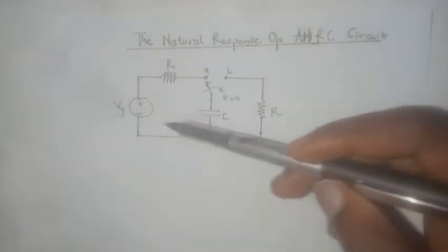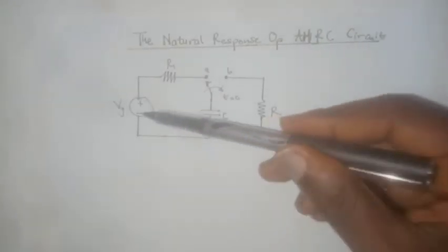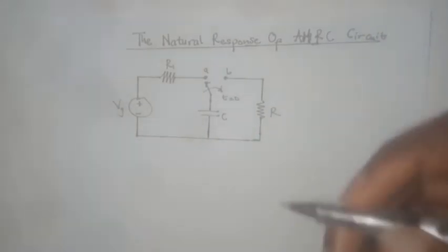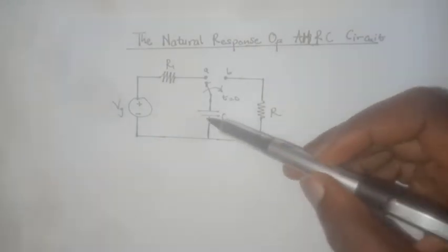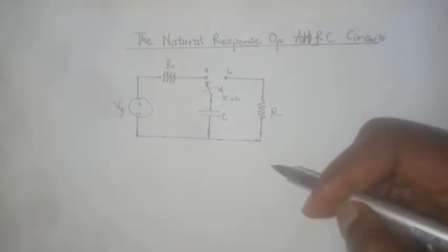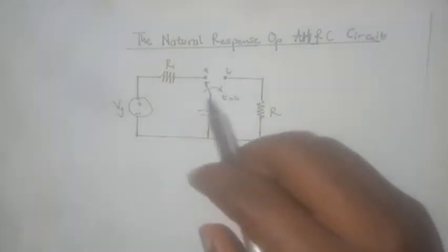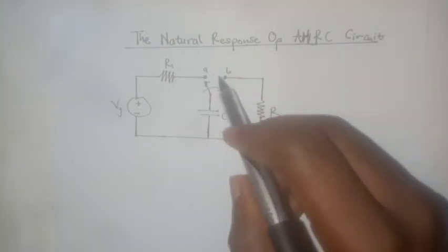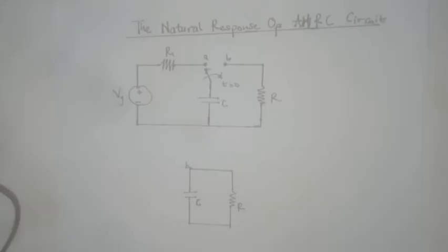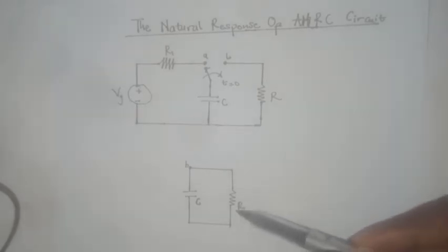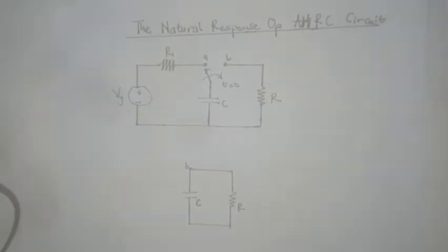We have a capacitor connected across a voltage VG for a very long time, such that it has been charged to maximum and is now behaving like an open circuit. We are going to switch it over to point B. Our task is to derive an expression that allows us to figure out the voltage and current flowing through resistor R at any point in time as the capacitor discharges.